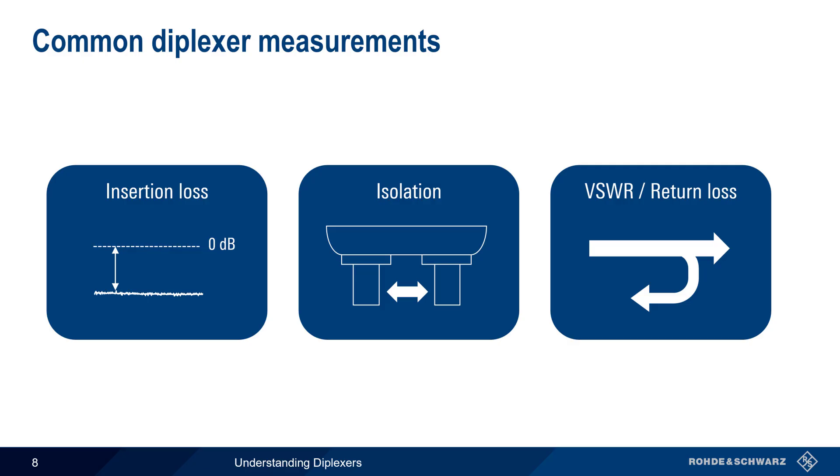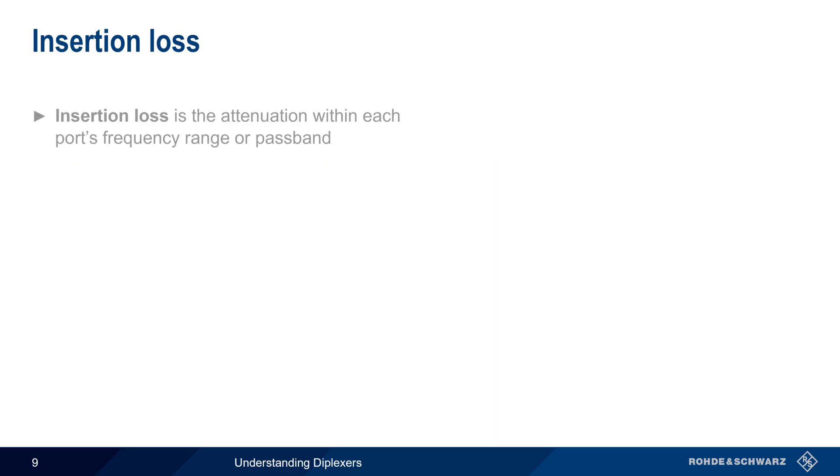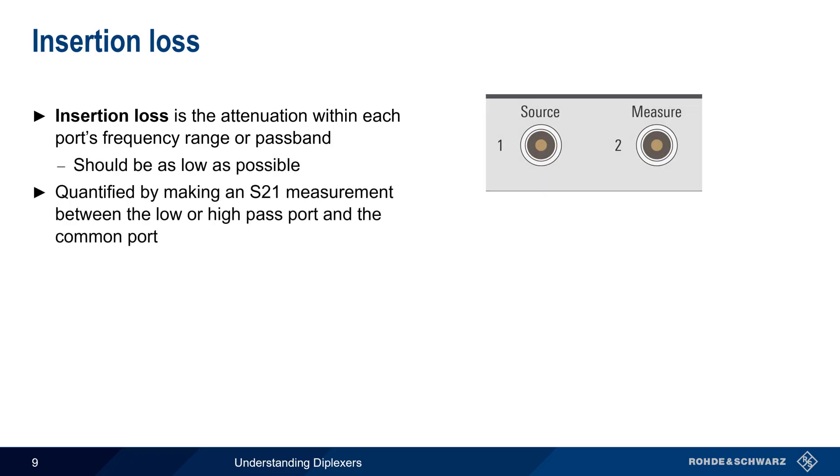Let's start by looking at insertion loss. Insertion loss is the attenuation that occurs within each port's frequency range or passband. This attenuation is undesirable, and should be as low as possible. We measure insertion loss by making a so-called S21 measurement between the low-pass, or high-pass port, and the common port.